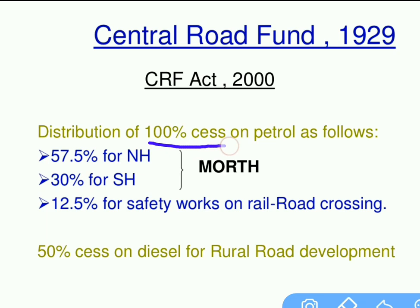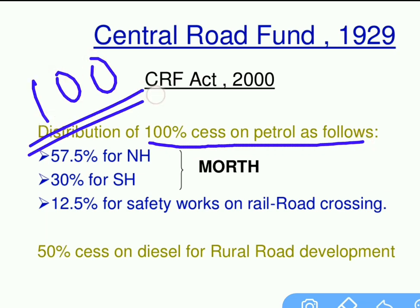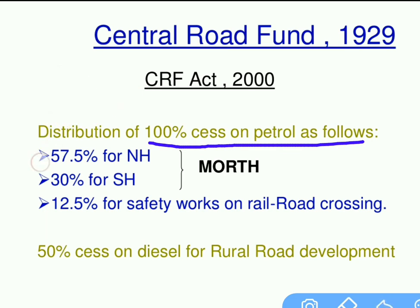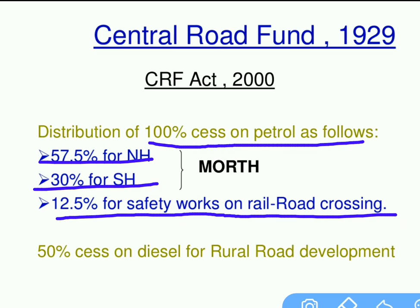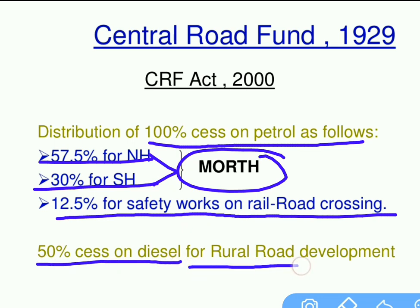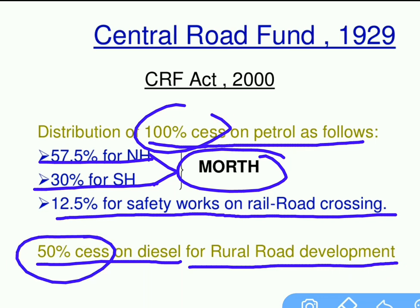Regarding distribution of the 100% cess on petrol: 57% goes to national highways and 30% goes to state highways. Both national highways and state highways are under MORTH — Ministry of Road Transport and Highways. Additionally, 50% cess on diesel goes toward rural road development.